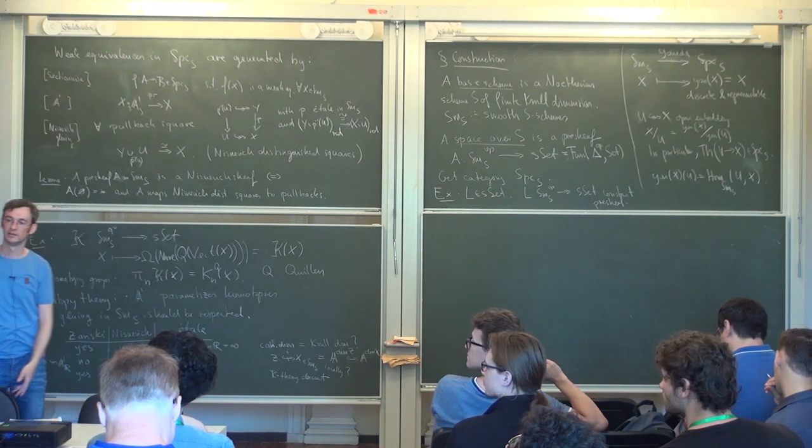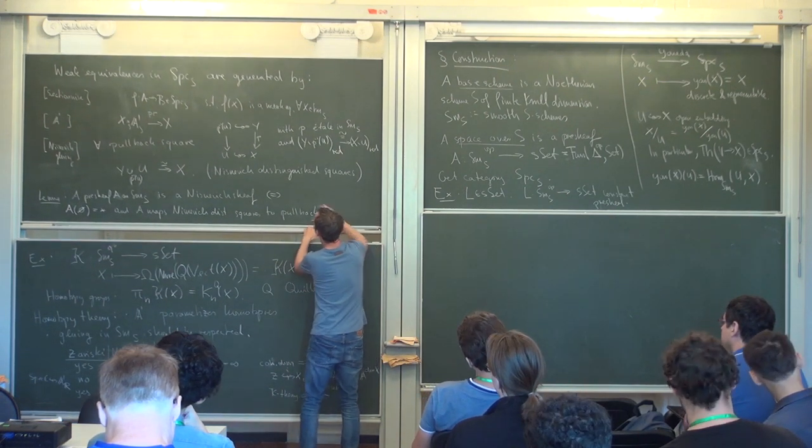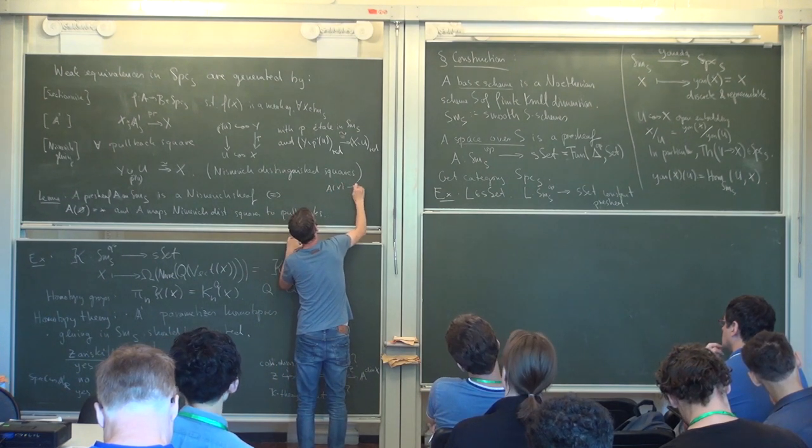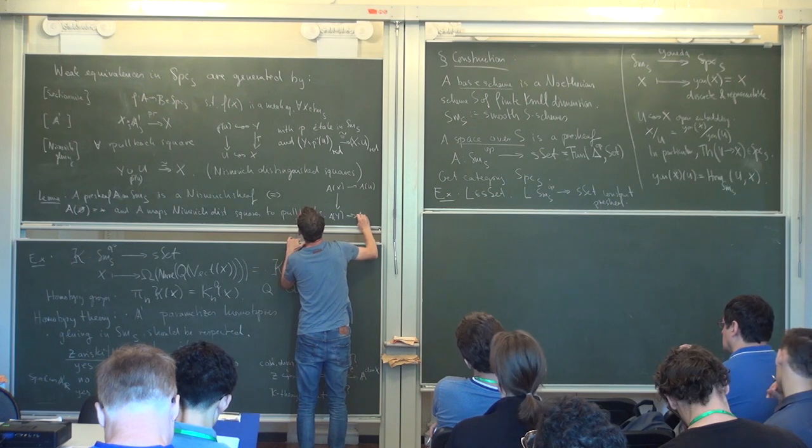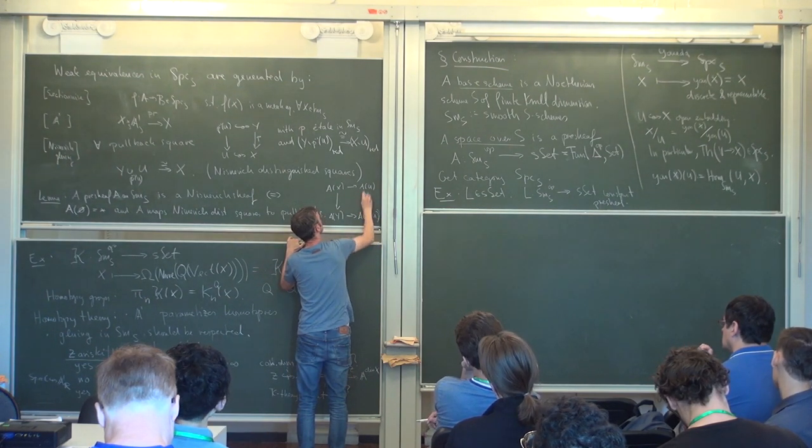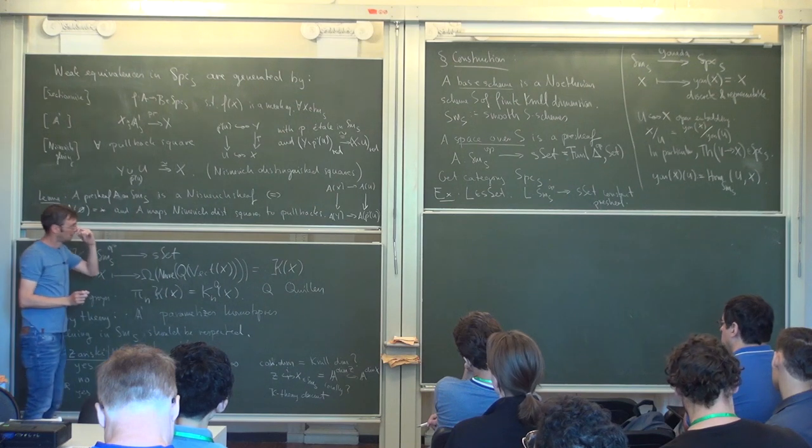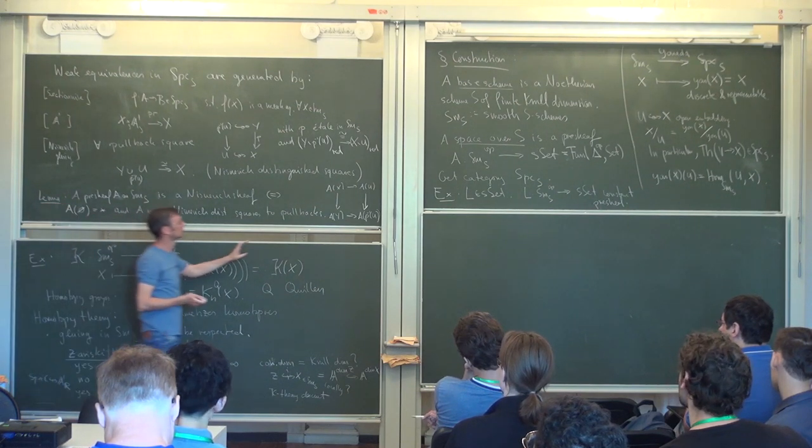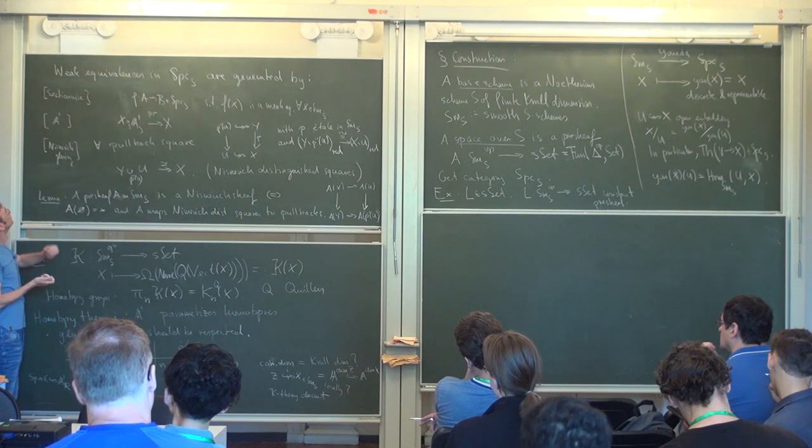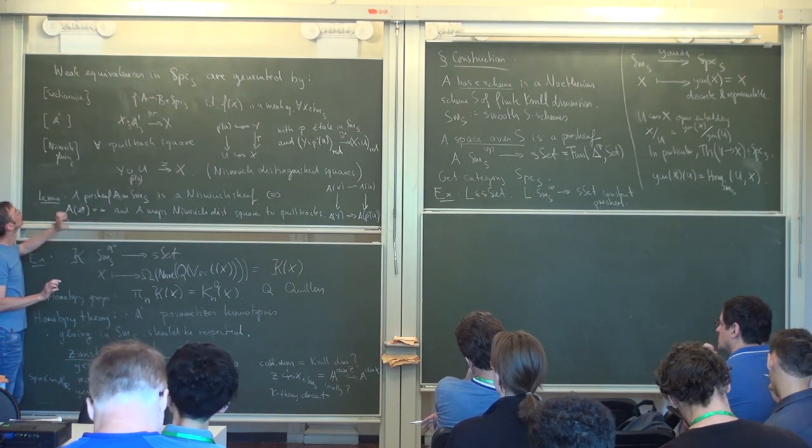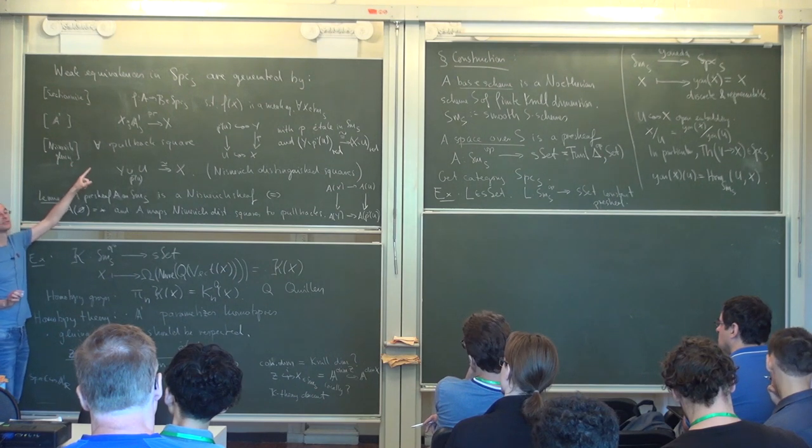Well, here I actually didn't specify what type of presheaf this is. So you can think of a presheaf with values in sets, or simplicial sets, or abelian groups, or groups. Maybe you want to ask—maybe you want to ask. Right now it's basically the pullback square, just to see. Yeah, sure. So this is then all upside down. So this is A of X, A of U, and A of Y, and A of this here. And in whatever category you are, this should then be a pullback. So does this answer your question? Yeah.